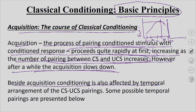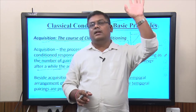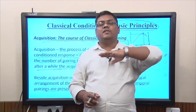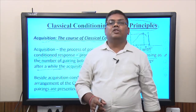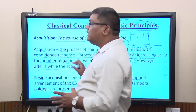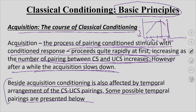Besides acquisition, conditioning is also affected by the temporal arrangement of CS-US pairing. The number of pairings of the neutral stimulus to the unconditioned stimulus determines the level of conditioning — more pairings mean higher conditioning. But after a certain number of trials the dog will not learn anything more; it will plateau off. The arrangement of how and when stimuli are presented also determines how classical conditioning proceeds.